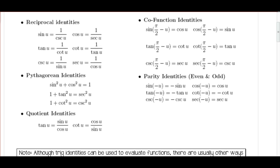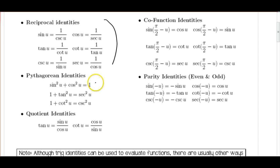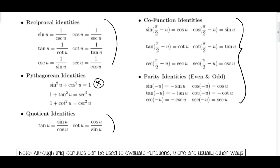A lot of these you already know. We already know the reciprocal identities. We should know the Pythagorean identities, at least sine squared u plus cosine squared u equals 1, and then you can derive the others. We should know the quotient identities. These over here maybe you're not as familiar with, but make sure that you're learning those as we go.